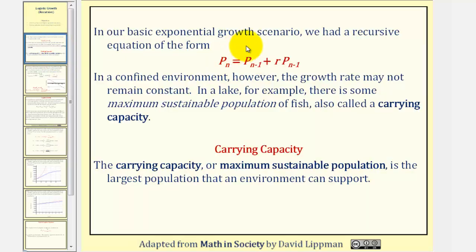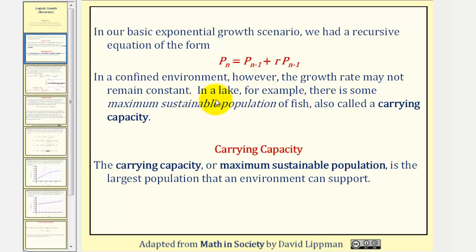In our basic exponential growth scenario, we had a recursive equation in the form p sub n equals p sub n minus one plus r, the growth rate expressed as a decimal, times p sub n minus one. In a confined environment, however, the growth rate may not remain constant. In a lake, for example, there is some maximum sustainable population of fish, also called a carrying capacity, where the carrying capacity is the largest population that an environment can support.